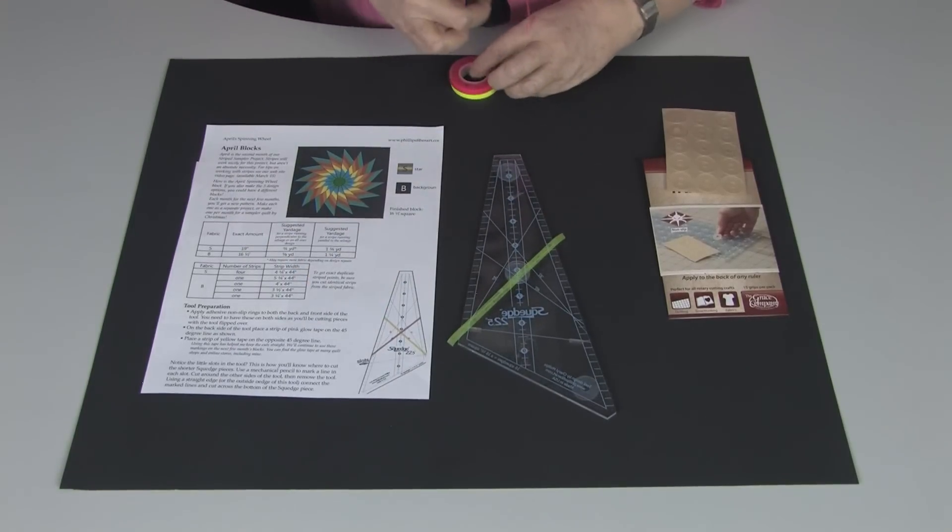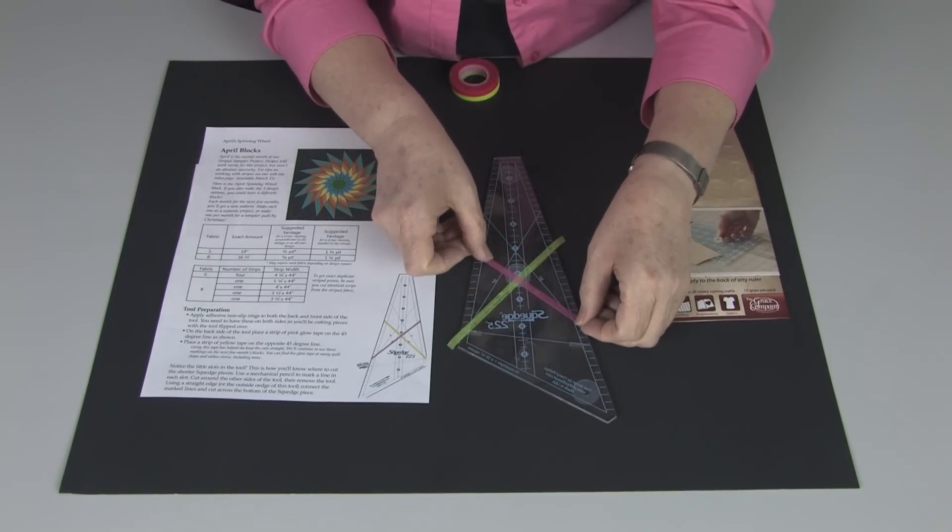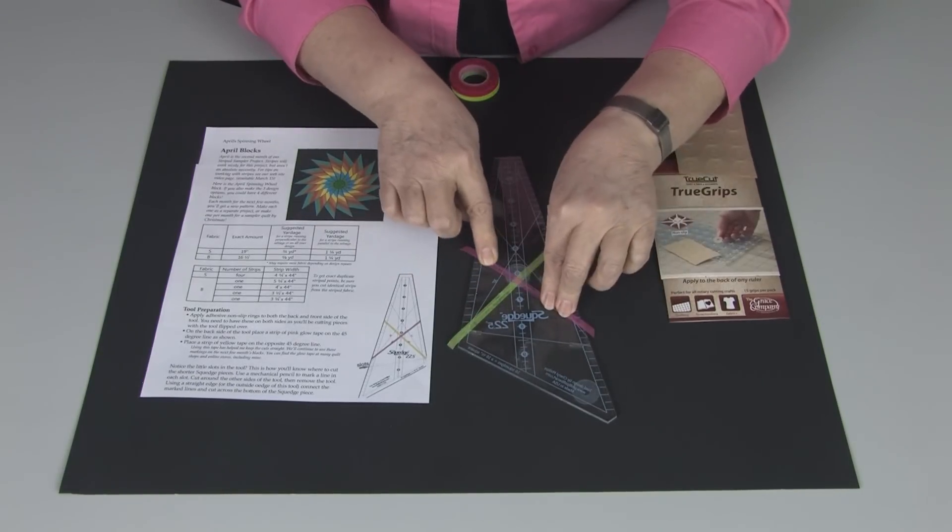And double check that my yellow is in the same direction as the yellow on my pattern sheet. And then I'll add the pink piece, directly over the 45 degree line.